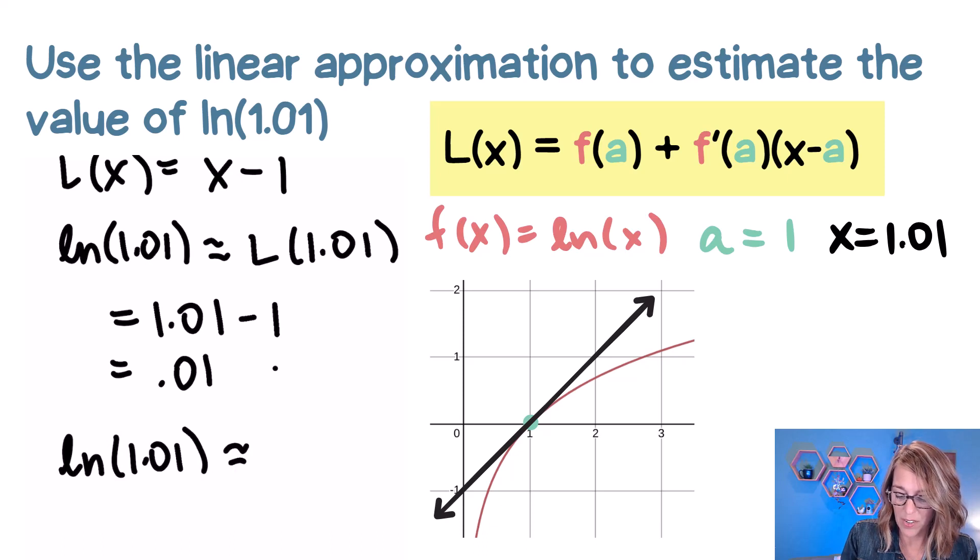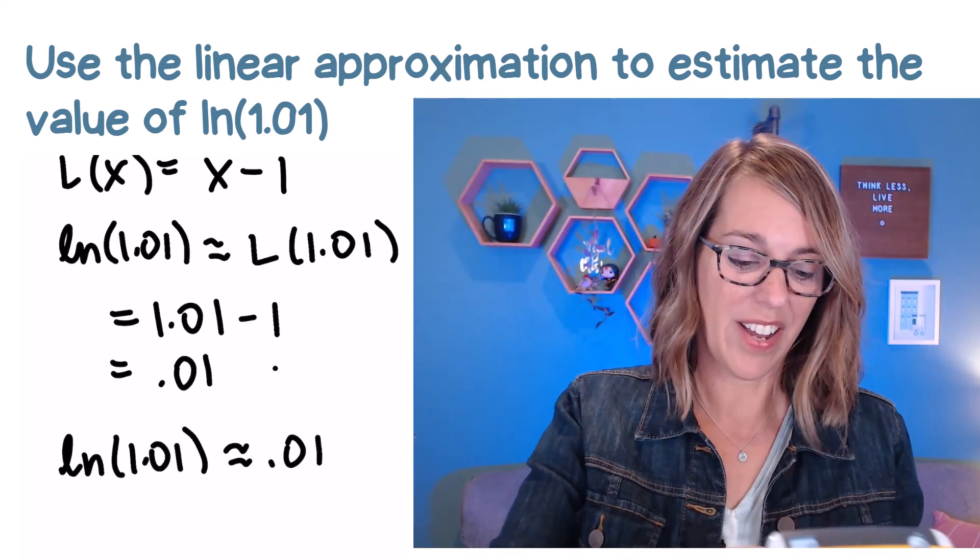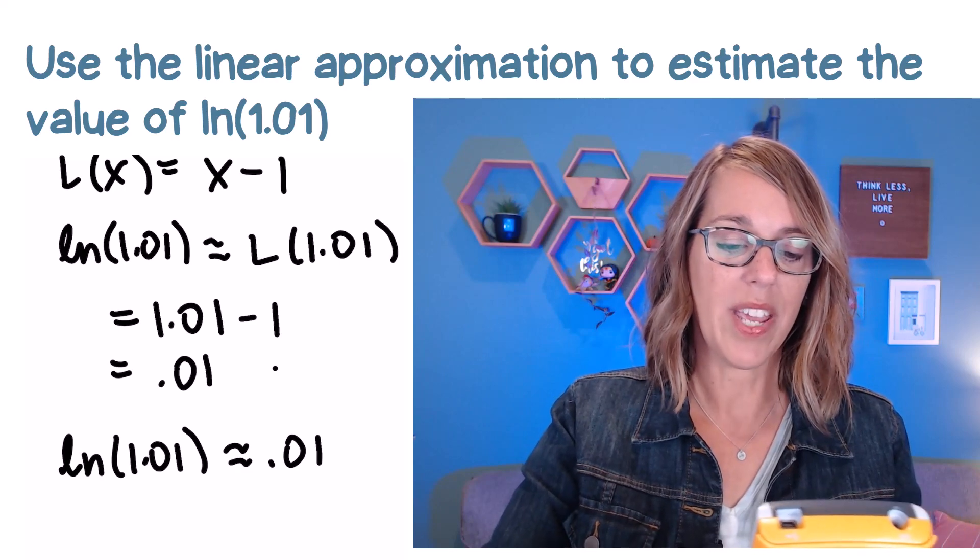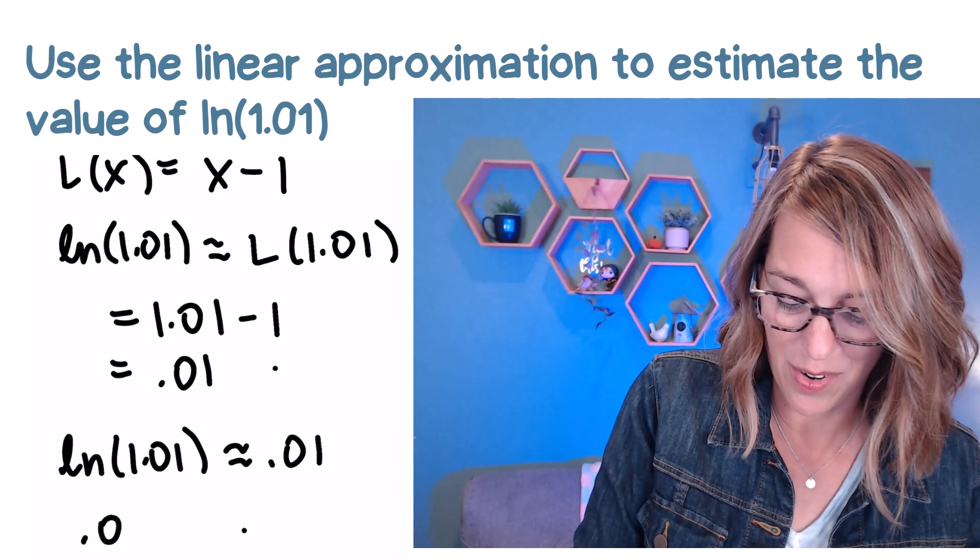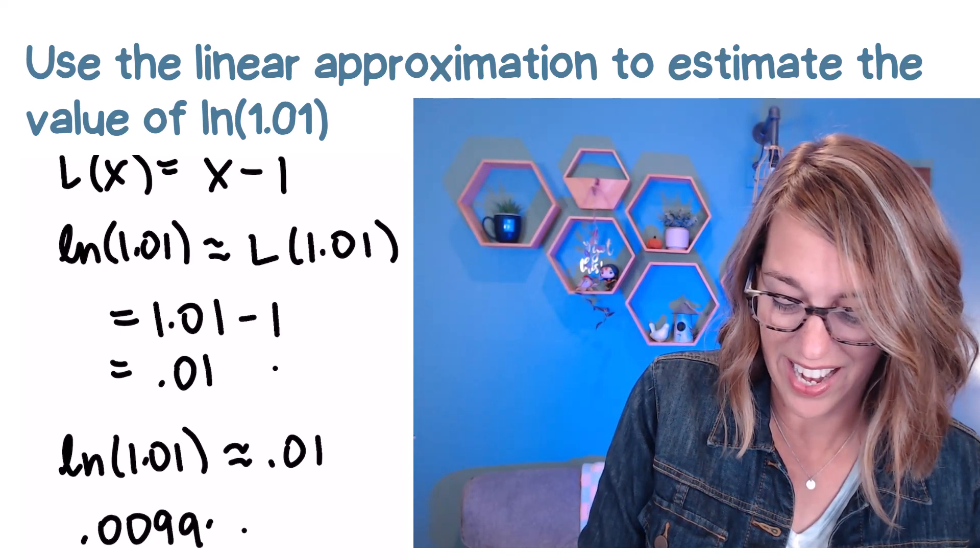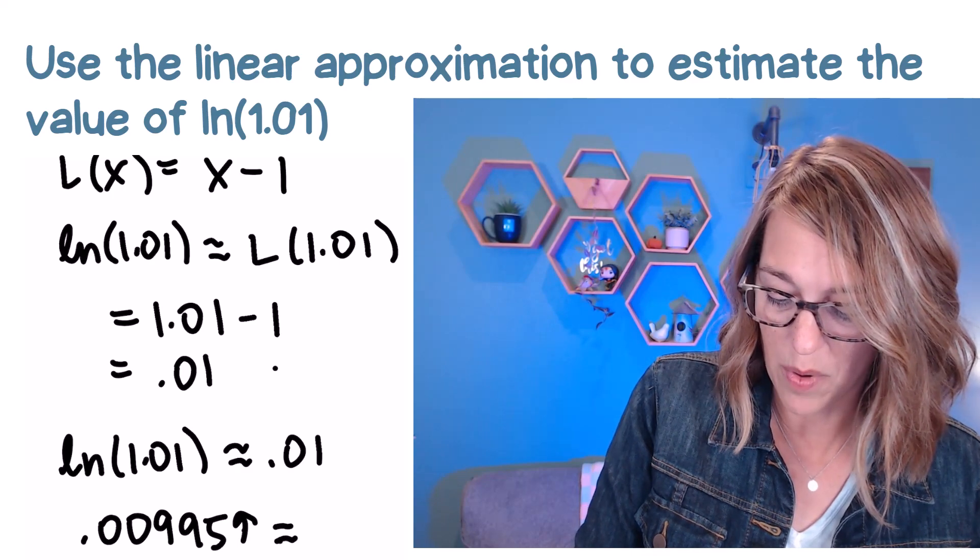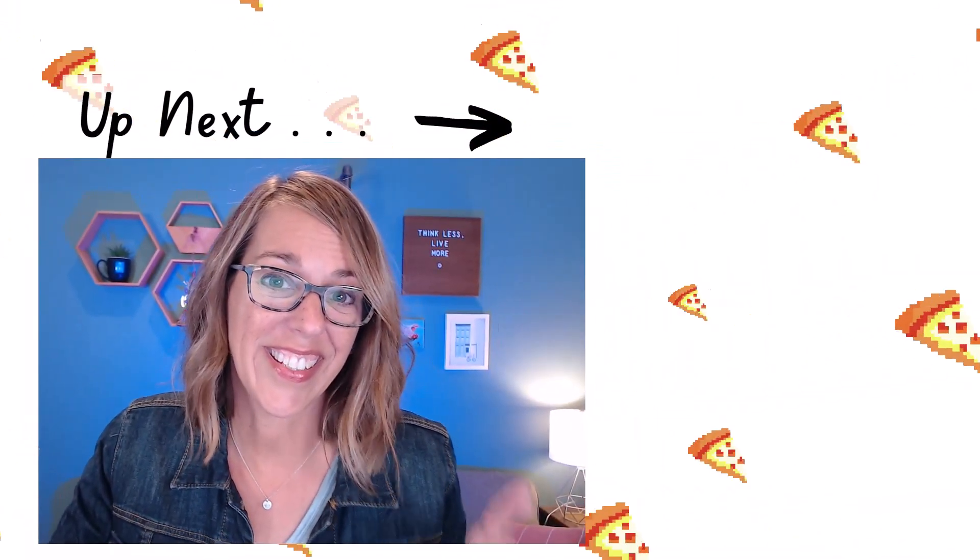So we can say that the natural log of 1.01, approximating using our linearization, is 0.01. Now if I were to put this into my calculator, I would do the natural log of 1.01, and we get 0.00995, which definitely rounds up to 0.01. You got this.